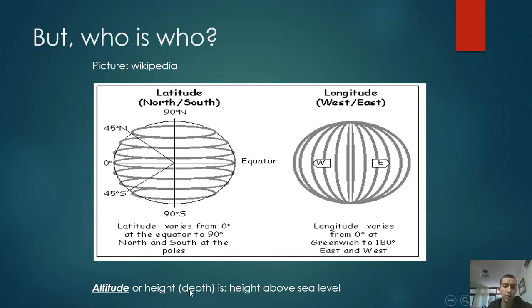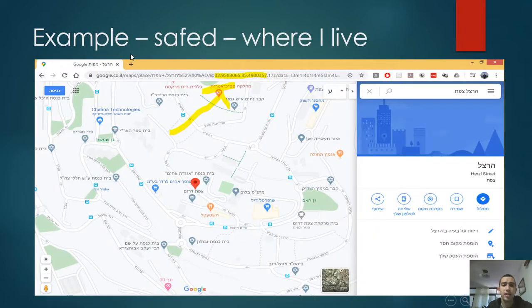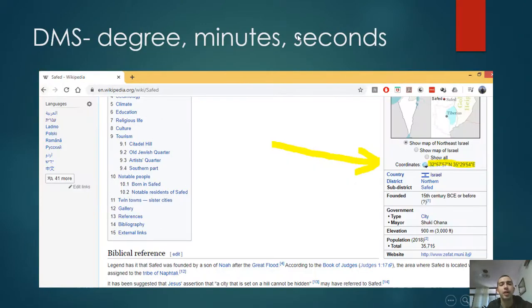Here is an example: where I live. You see a URL of Google Maps with the longitude and latitude. When you enter to the Wikipedia site, you see a stretch coordinate. So what is this? It's called DMS, where the longitude and latitude are converted to DMS.